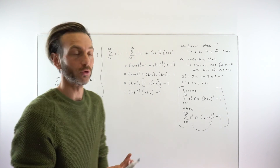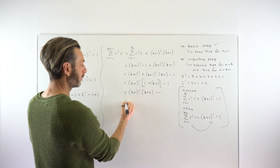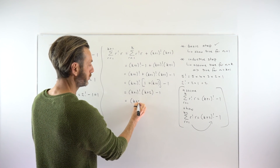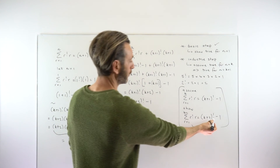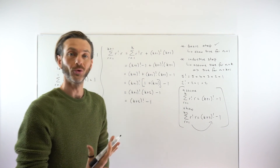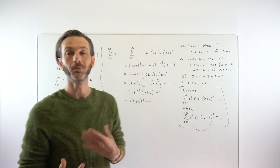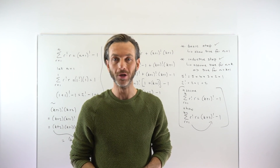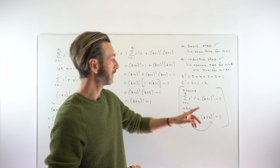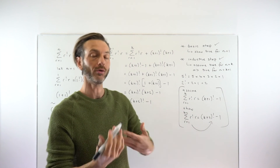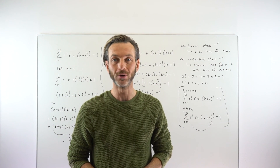Pulling that result over, we get k plus 2 factorial minus 1 — and that's exactly the result we were trying to prove. So that gives us our second step, the inductive step, and that completes the proof by induction. Proof by induction is not easy. You need to learn the overall steps and what to look out for. Every question is going to be a little different, so it does take a bit of practice and experience.